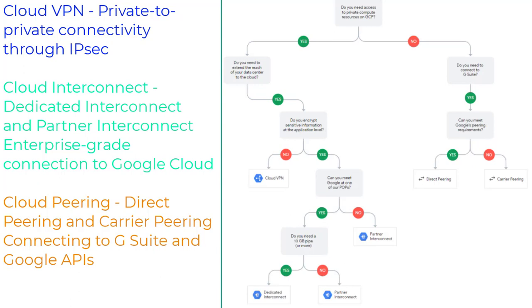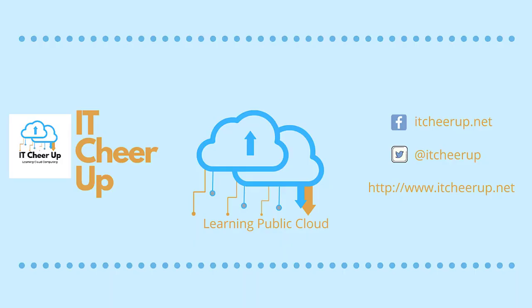Understanding exactly what you need from network connectivity is just as important as understanding what each of the cloud network connection products does best. Please check out my other GCP decision trees videos and my blog for more help. Thanks for watching, and as always, subscribe to my channel for more great cloud computing learning tips.